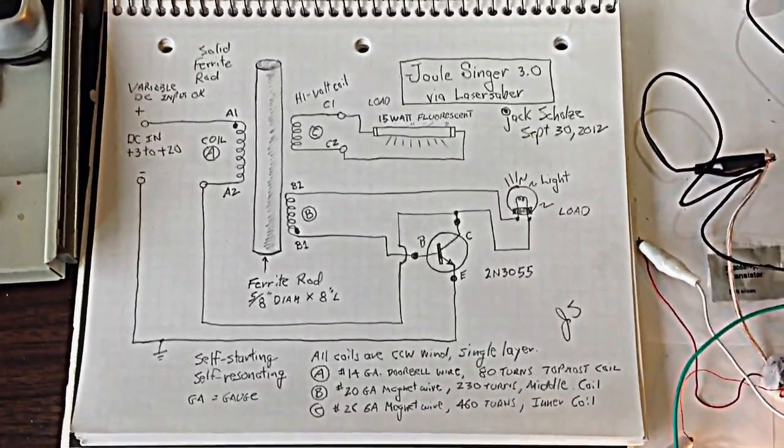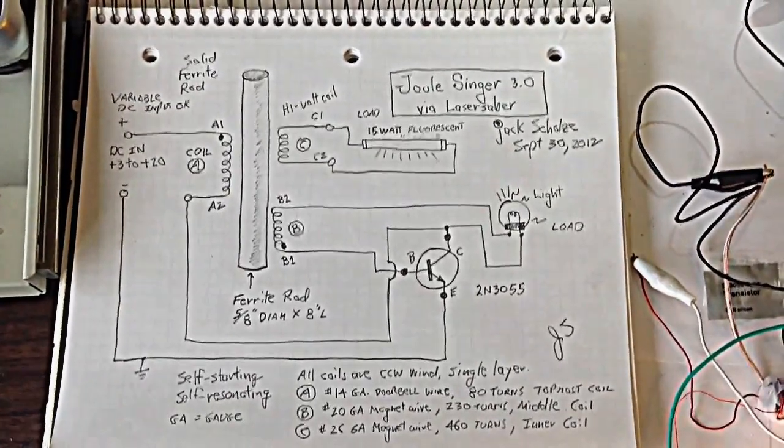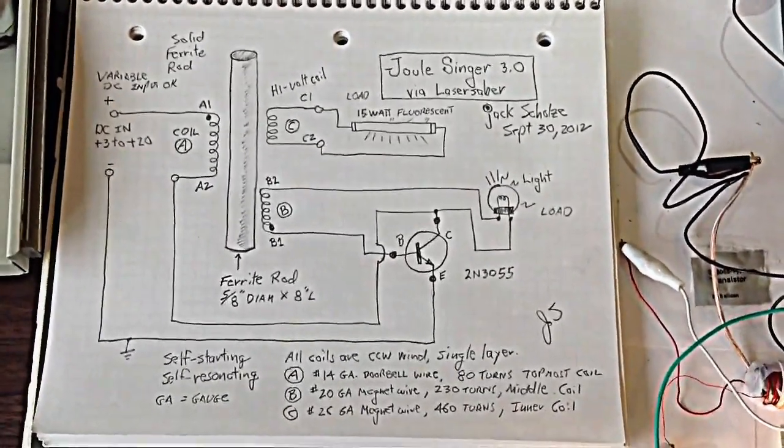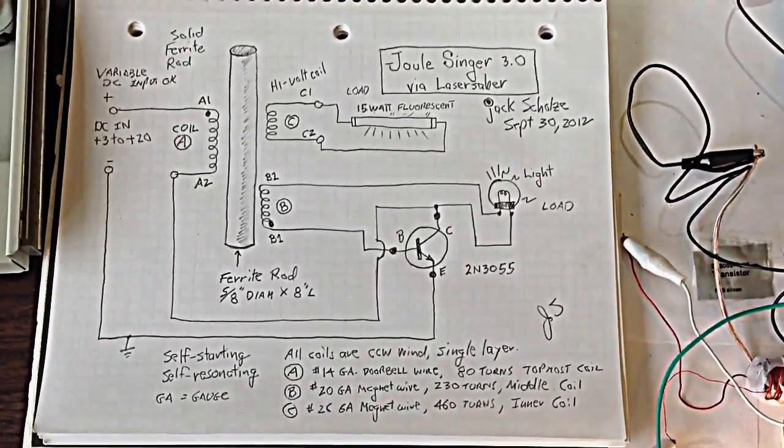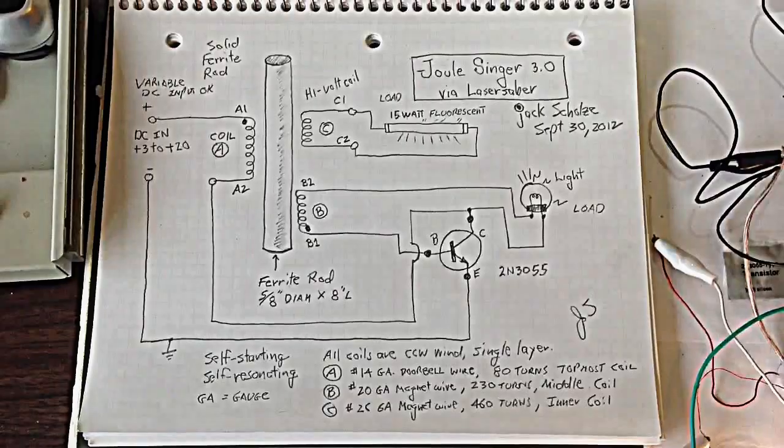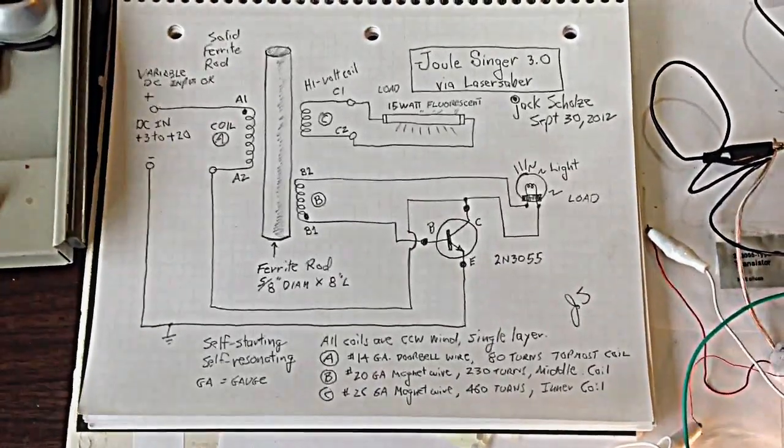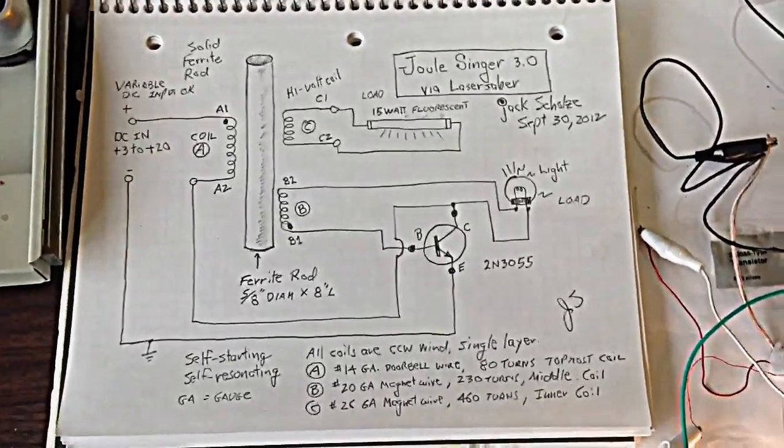The innermost coil, which has the most winds, turns out to have a couple hundred volts of induced AC, which can easily light a fluorescent lamp. And actually, it can handle different kinds of loads.